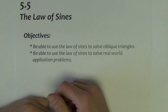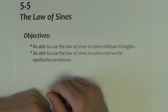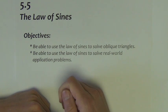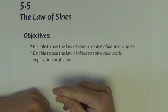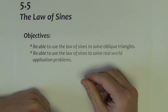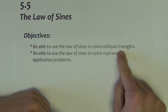In the last two sections of Chapter 5, we're going to look at a couple of different laws that allow us to solve non-right triangles. We call these oblique triangles.